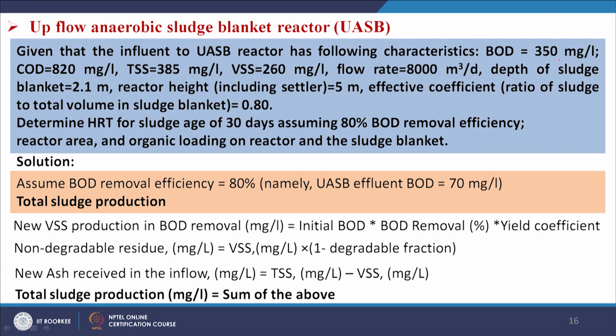Now we will solve a numerical problem. Given: influent BOD = 350 mg/L, COD = 820 mg/L, TSS = 385 mg/L, VSS = 260 mg/L, flow rate = 8000 m³/day, depth of sludge blanket = 2.1 m, reactor height including settler = 5 m, effective coefficient = 0.80. Determine HRT for a sludge age of 30 days assuming 80 percent BOD removal efficiency, reactor area, and organic loading on the reactor and sludge blanket.